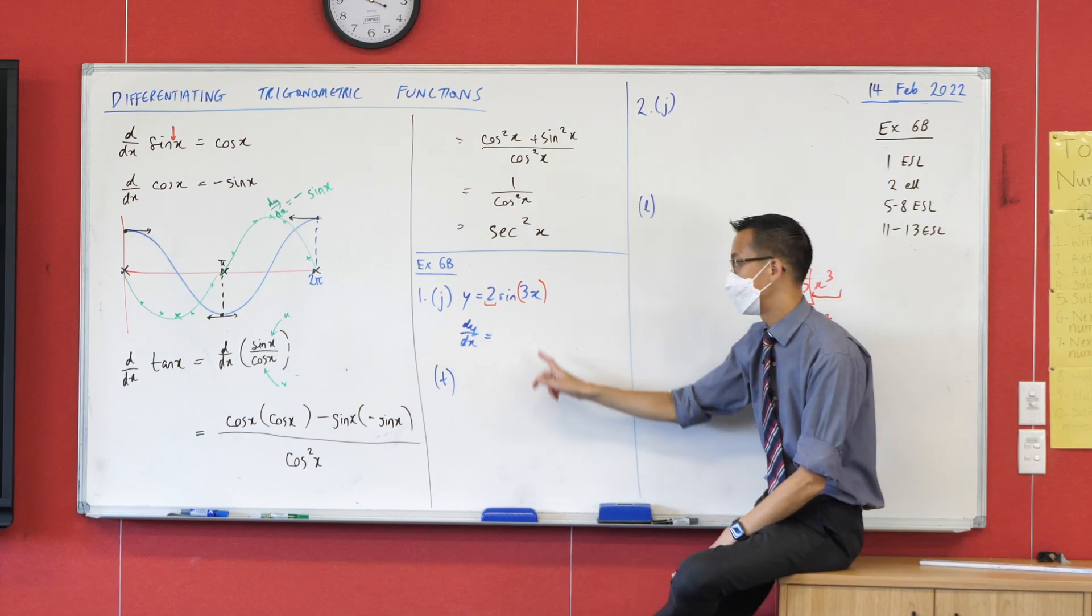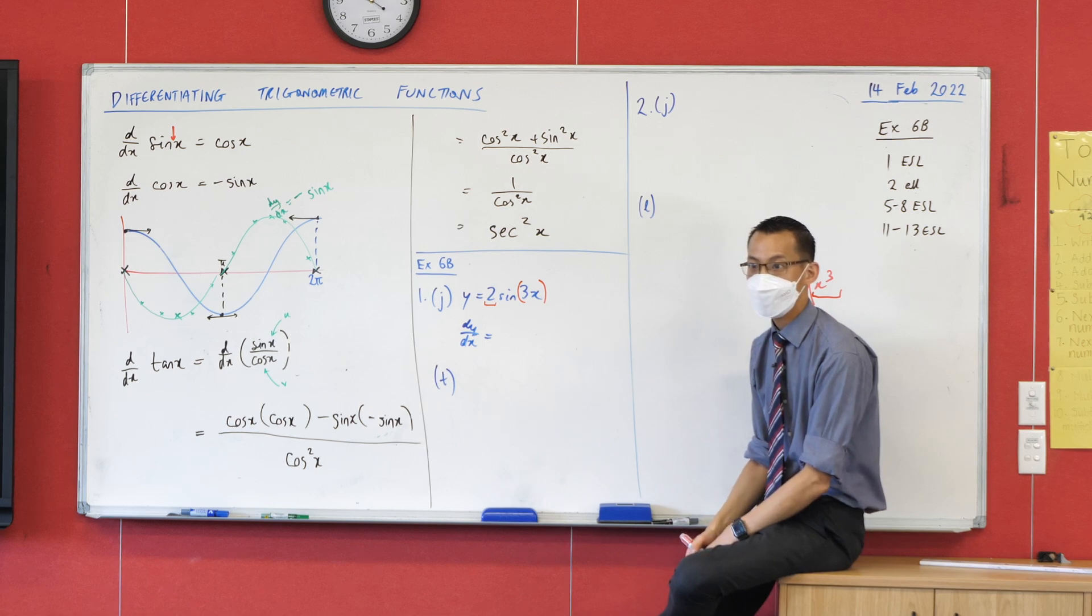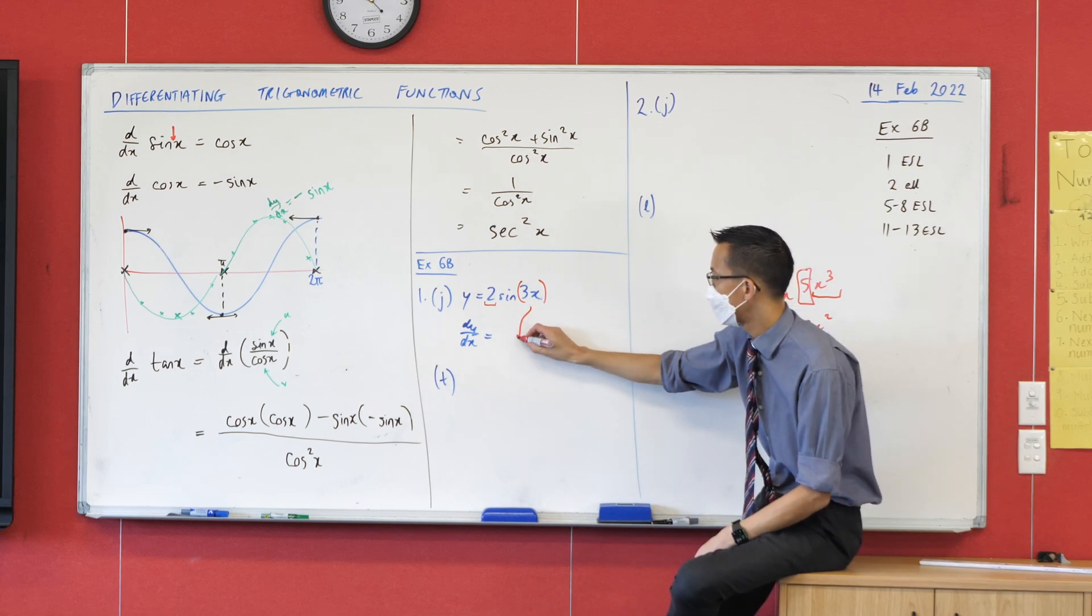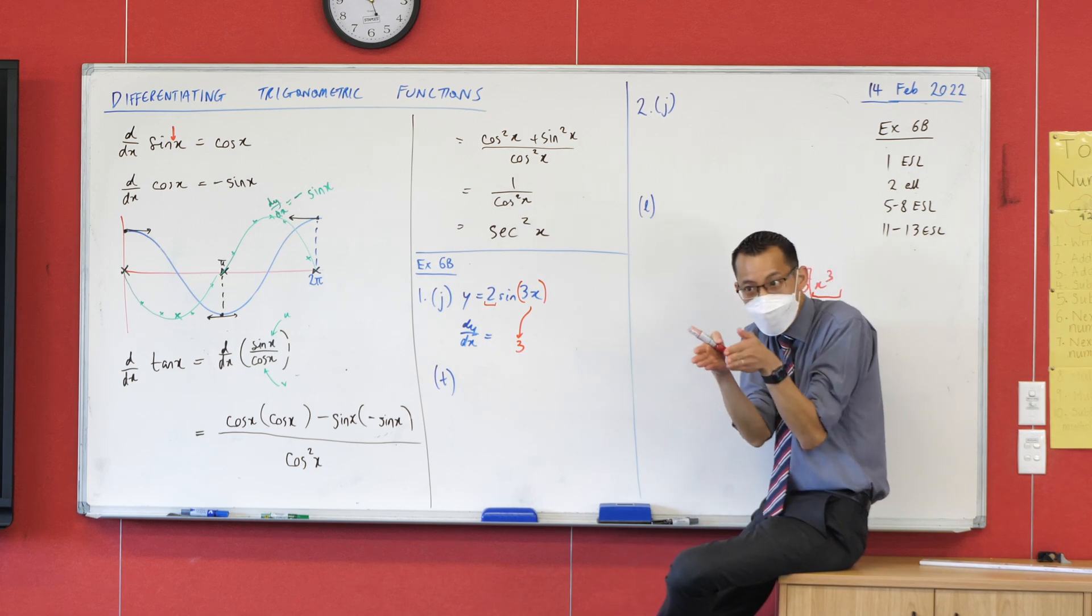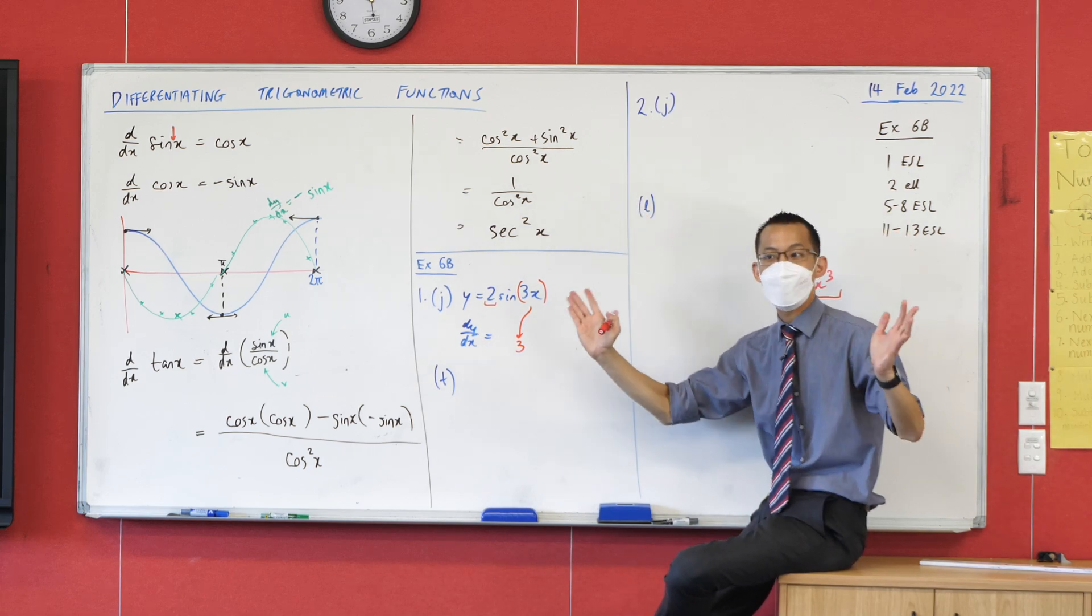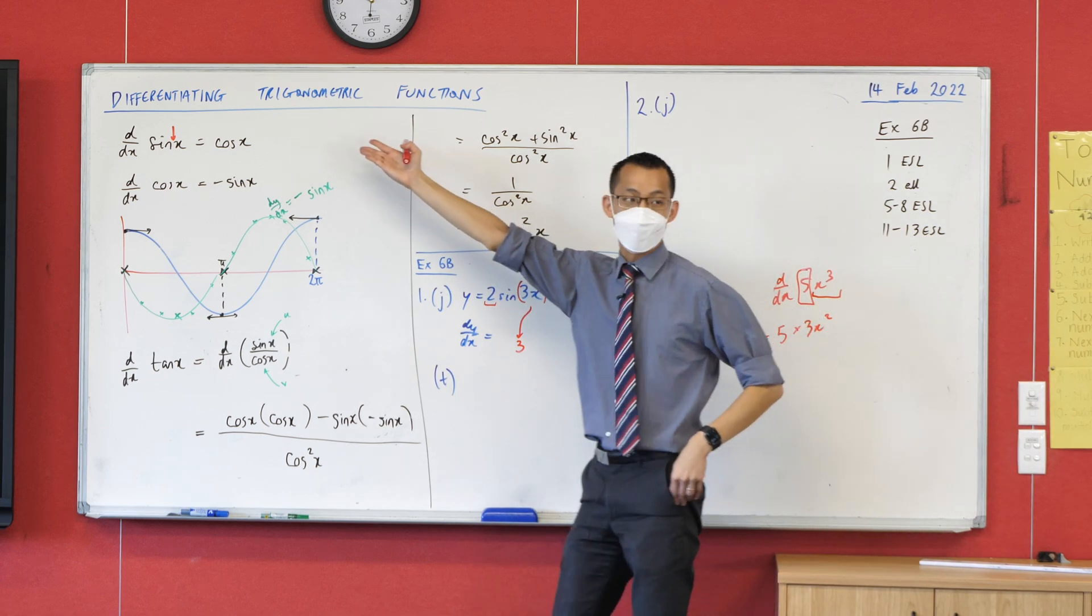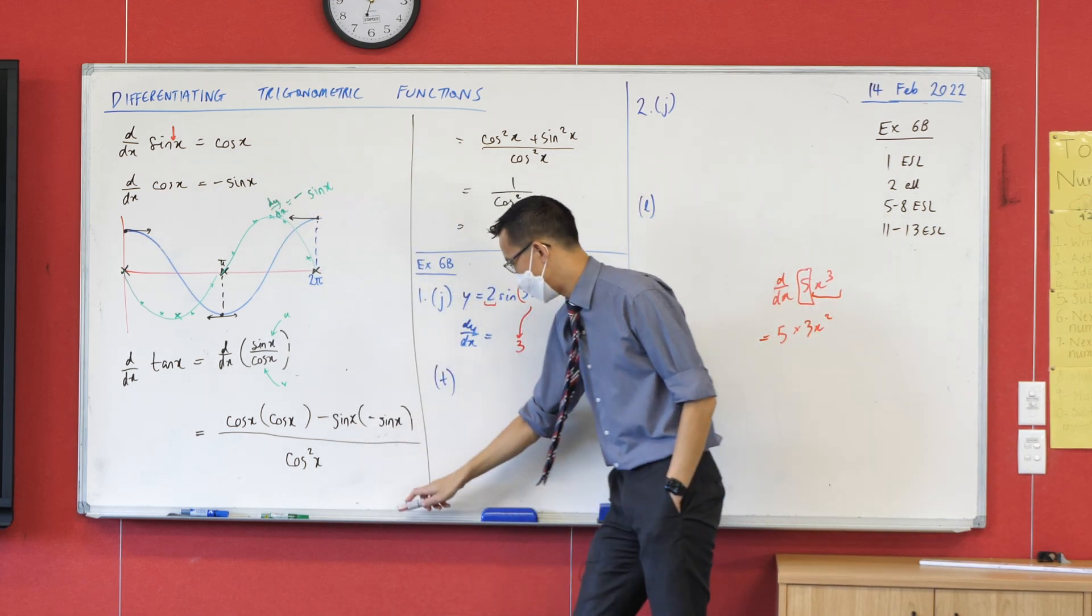So can you tell me, what's the derivative of 3x? It's just 3, right? So I'm going to write that 3 right there. There's the inside derivative, as it were. Now, the outside is sine. What does sine turn into? Cos, right? So therefore this is going to next be cos.